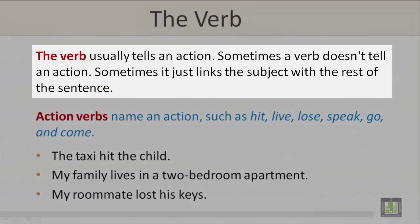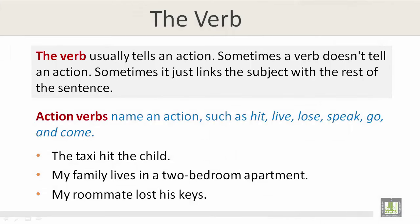The verb usually tells an action. Sometimes a verb doesn't tell an action — sometimes it just links the subject with the rest of the sentence. Action verbs name an action, such as hit, live, lose, speak, go, and come. The three examples below — the taxi hit the child, my family lives in a two-bedroom apartment, and my roommate lost his keys — have highlighted verbs that are called action verbs, and they name an action.